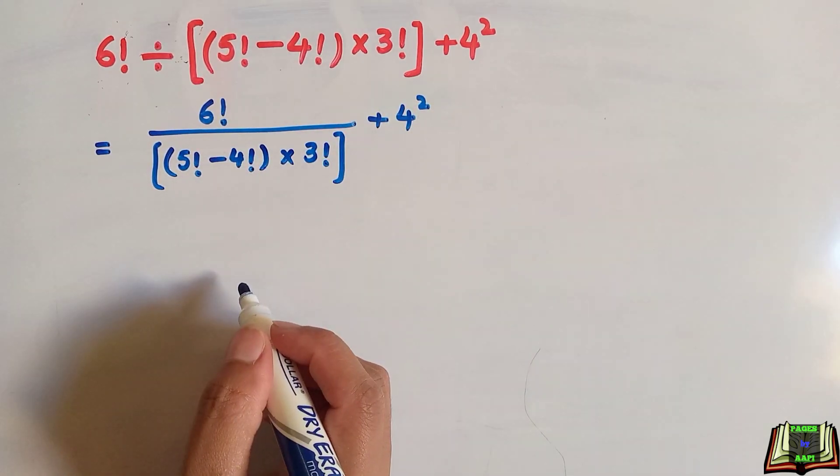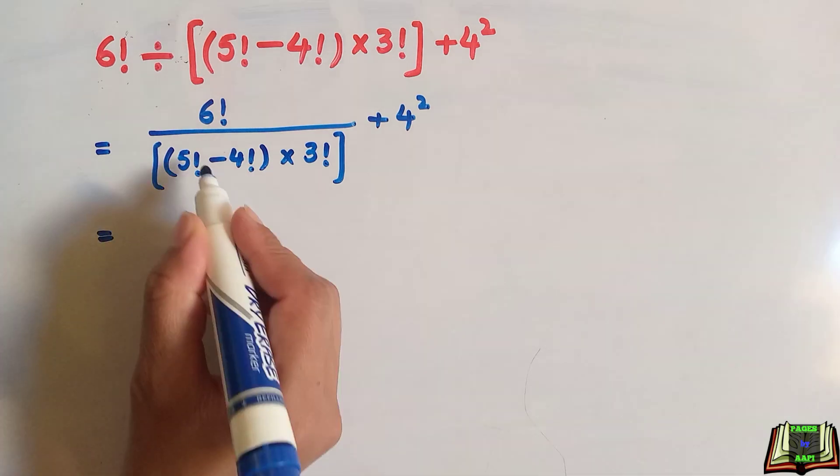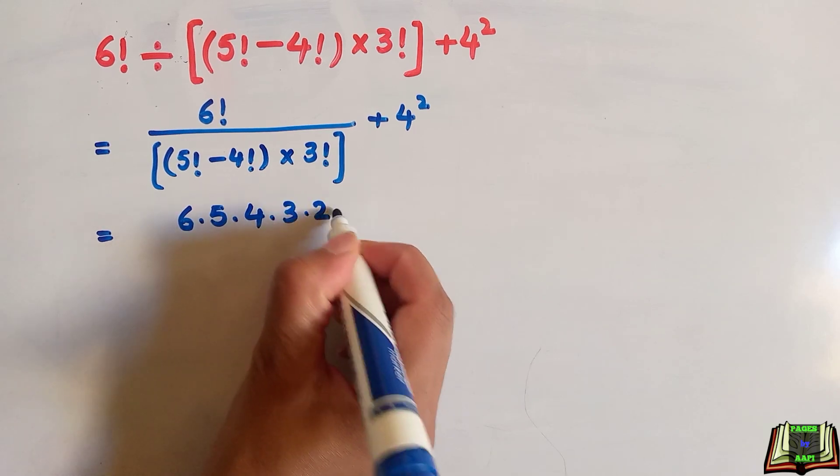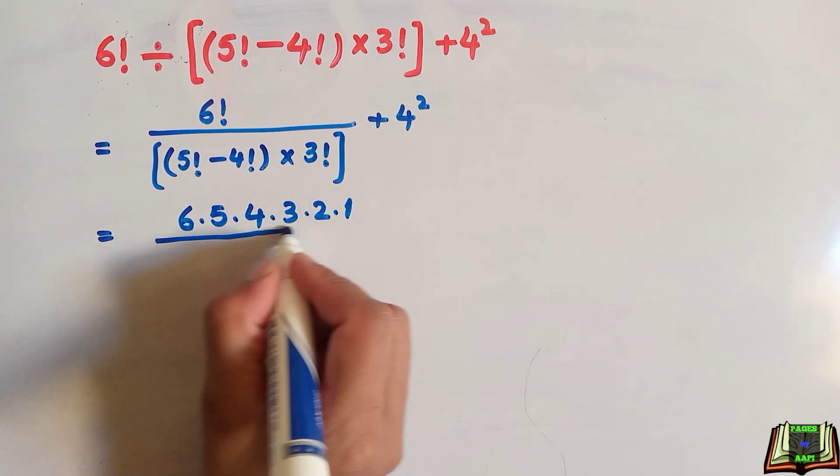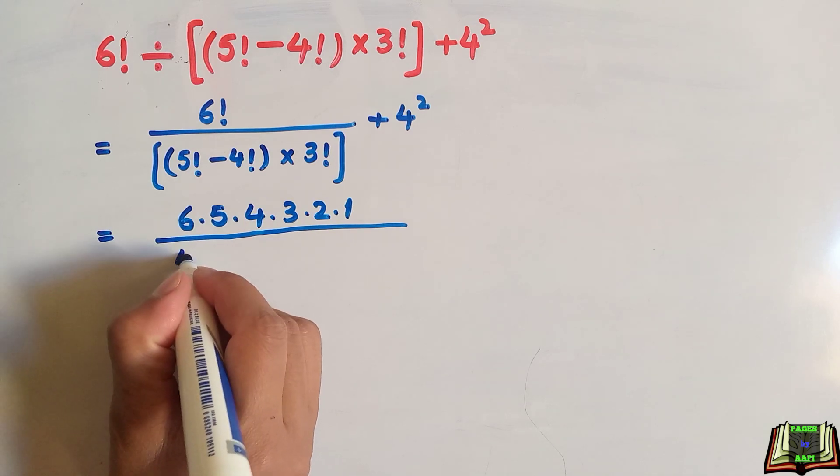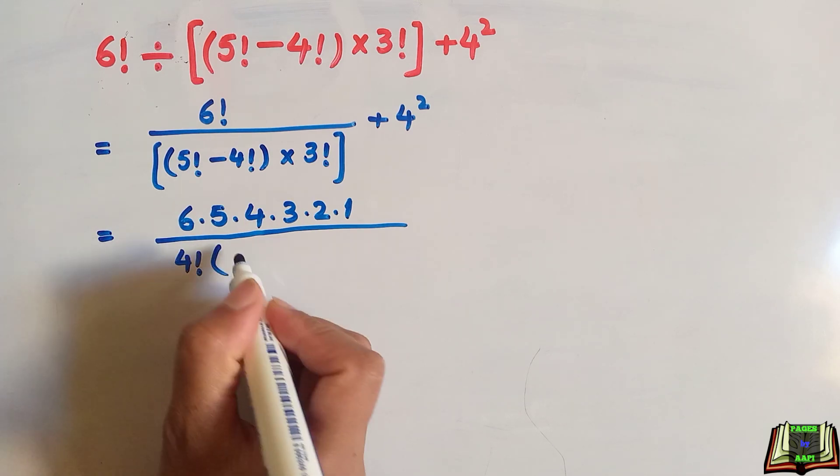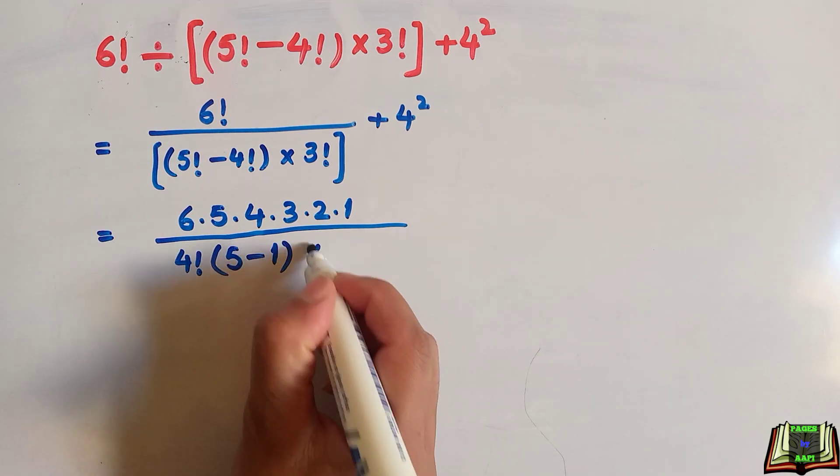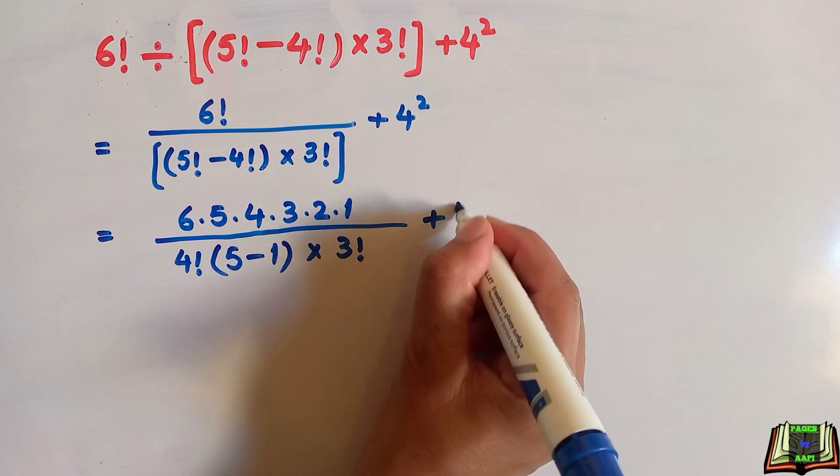We can rewrite 6 factorial as 6 times 5 times 4 times 3 times 2 times 1, divided by. We will take 4 factorial common from here, and inside the parenthesis we have 5 minus 1, multiply by 3 factorial, plus 4 squared.